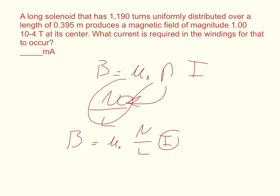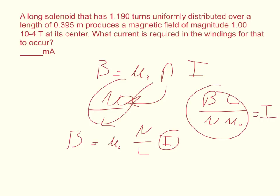Rearranging, B times L over N times mu naught equals I. When you plug everything in, everything has to be in SI units: the magnetic field is already in tesla, the length is already in SI units, the number of turns has no units, and the permeability of free space is 1.2566 times 10 to the negative 6th. That will cause all the units to cancel out and leave amps.